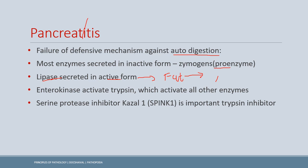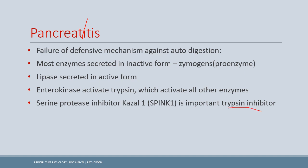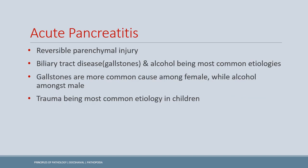Once activated, enzymes damage nearby structures. Trypsin is high yield — it activates all other enzymes. Enterokinase, secreted from the duodenum, activates trypsin. The SPINK1 gene is also important — it is a serine protease inhibitor of trypsin, so mutation in it increases susceptibility to pancreatitis.